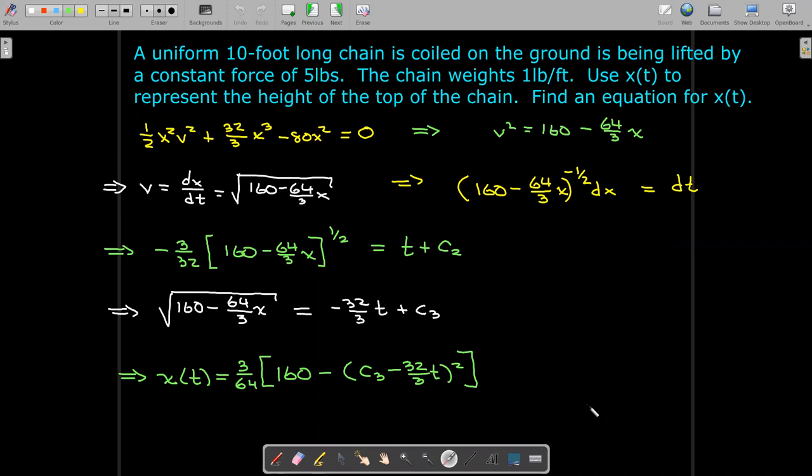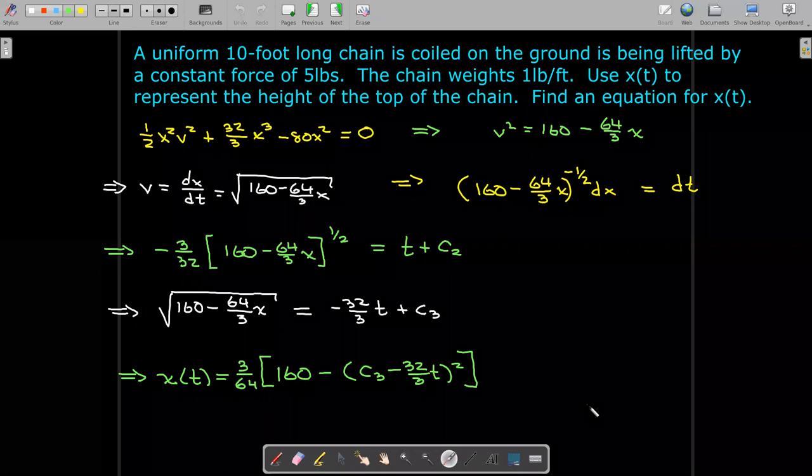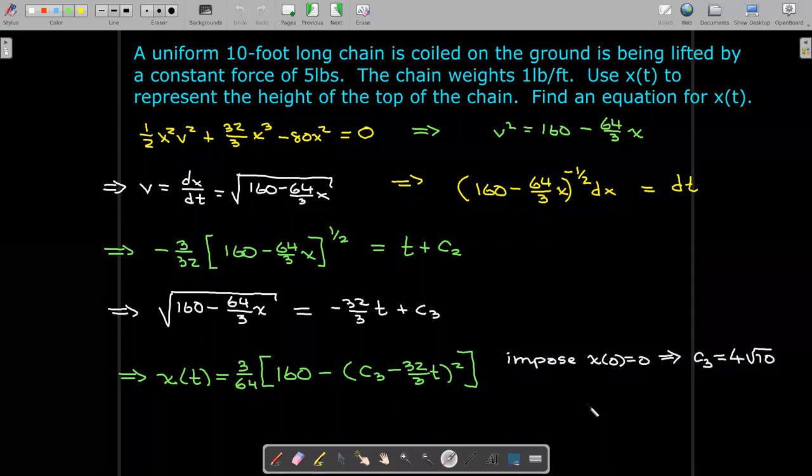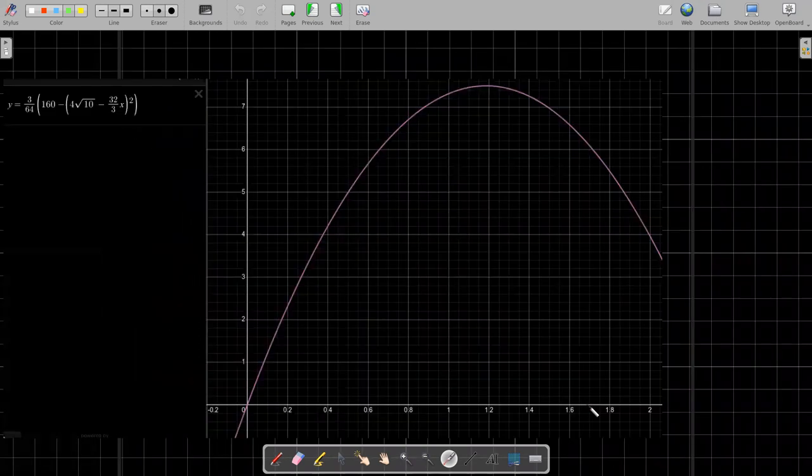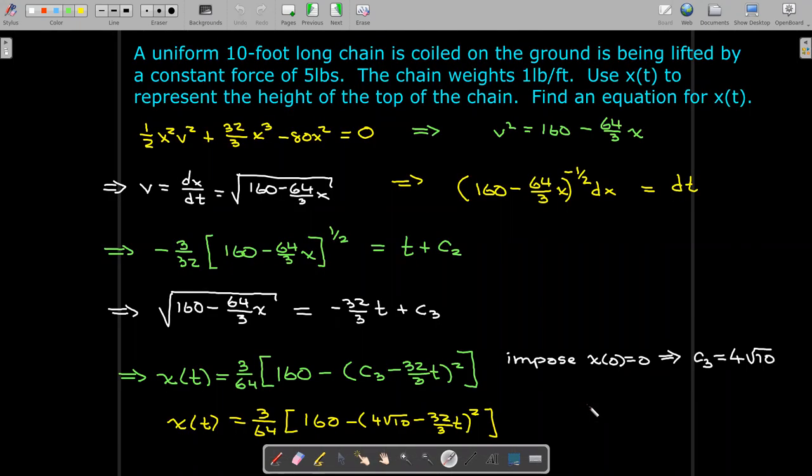And we get this expression here. How do we determine this constant c₃? We go back to our boundary condition. That gives us c₃ = 4√10. Now we have the solution. Now, we have to be careful here. If we go ahead and plot this solution, that solution is valid for all values of t as a function. But as a solution to the differential equation, it's not.